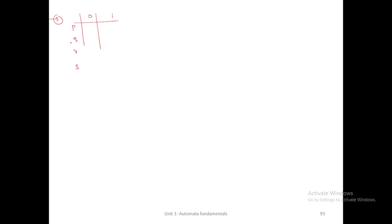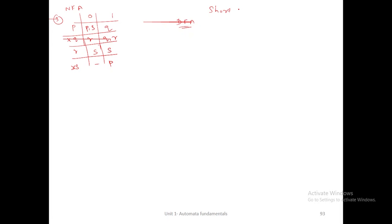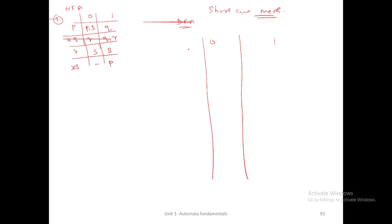Now the third problem — I will only give the shortcut method. The input symbols are 0 and 1. There are four states: p, q, r, s, in which q and s are final states. This is the given NFA. The answer is: p→s, q→r, q→r, s→s, dash→p. So how can you calculate the DFA using the shortcut method? This is only for verifying your answer is correct — for writing in your university exam, you should use the previous steps. This is the DFA transition table.